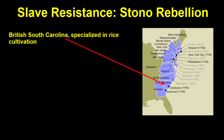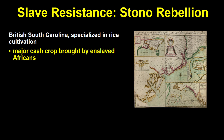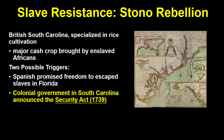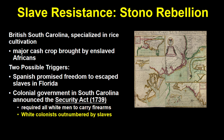Now let's talk about the second part of 4.6: slave resistance. There were many instances of enslaved people who resisted their oppression. For example, the Stono Rebellion in 1739 in British South Carolina, which specialized in rice cultivation — a major cash crop originally brought to the Americas by enslaved Africans. A few possible triggers: the Spanish had promised freedom to escaped slaves in their colony of Florida — not because they loved freedom, but to cause chaos for their British rivals. Another reason was that South Carolina had announced the Security Act, requiring all white men to carry firearms, as white colonists were far outnumbered by enslaved people and needed to enforce a racial hierarchy.